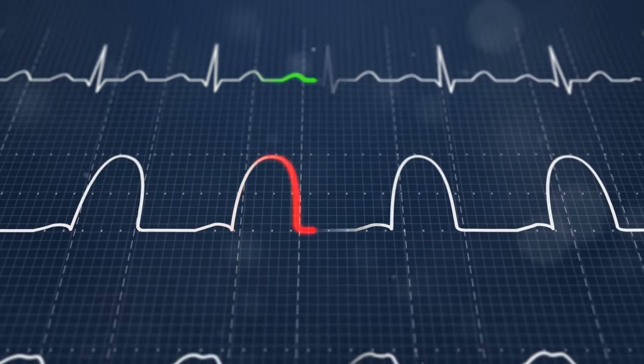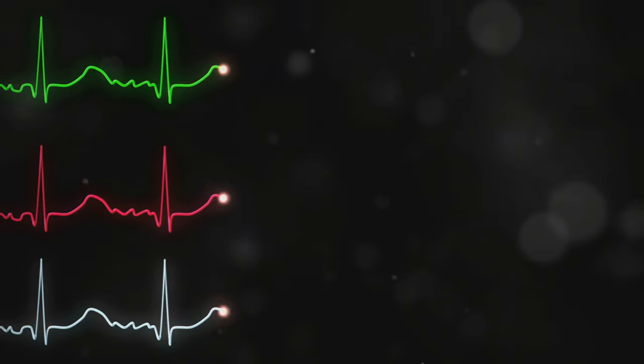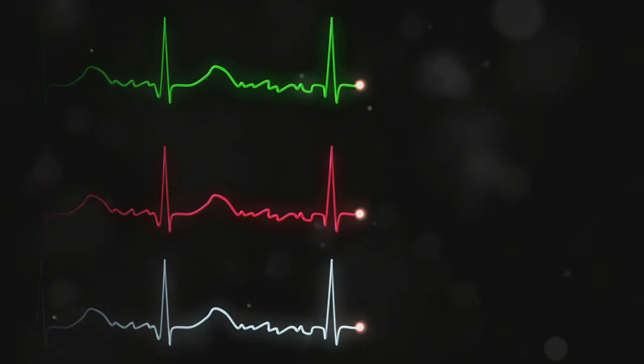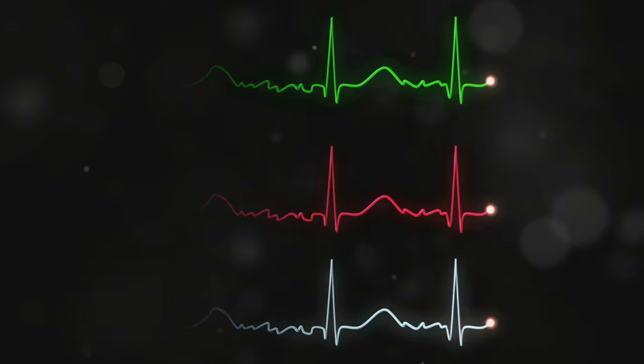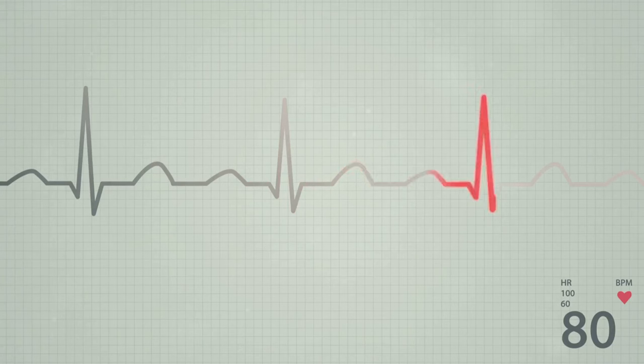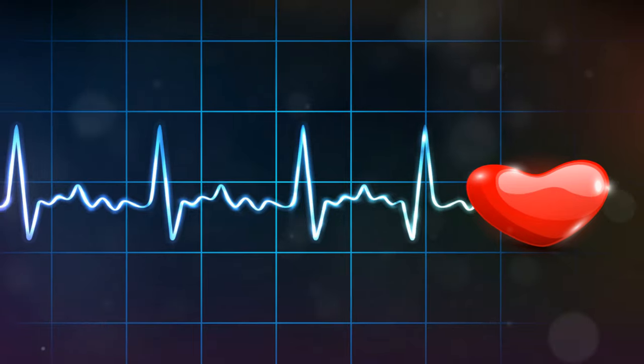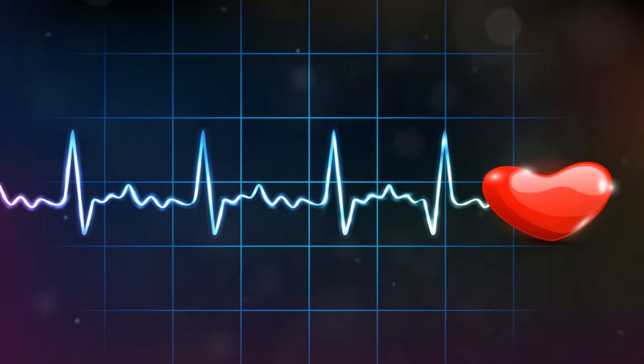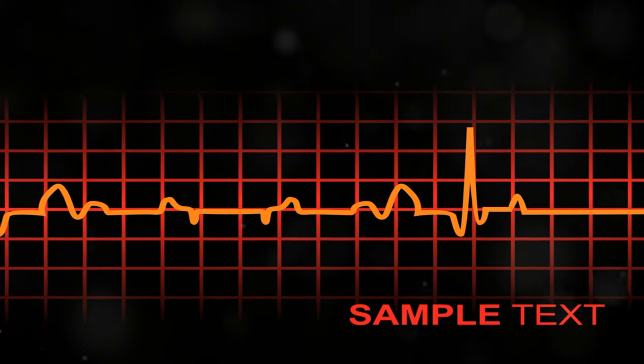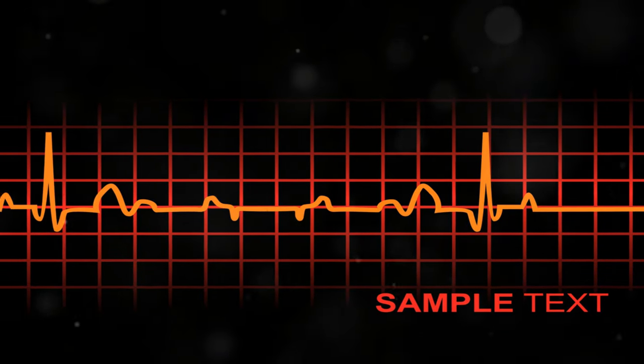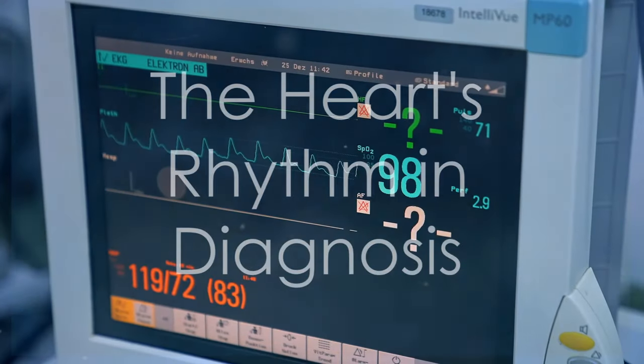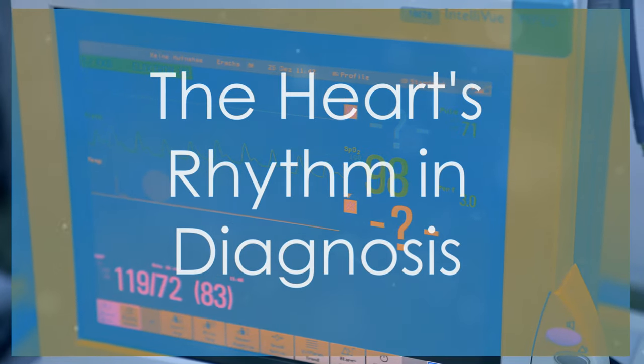The QRS complex corresponds to ventricular activation, and the T wave to ventricular recovery. Analyzing these waves helps physicians identify irregularities in heart rhythm and conduction. Together, heart sounds and ECG tracings provide a powerful toolkit for assessing cardiac function.